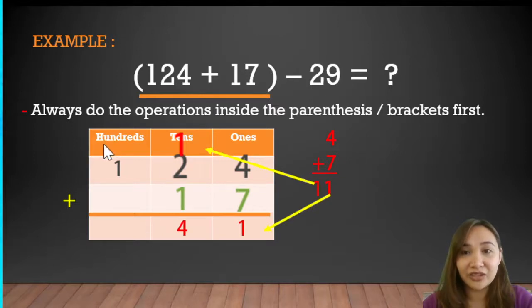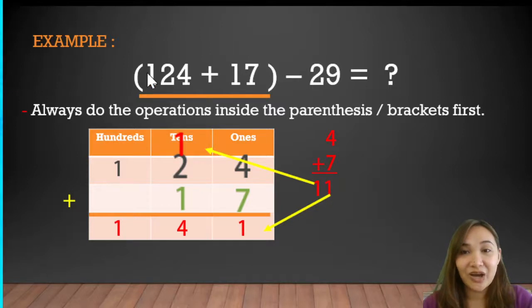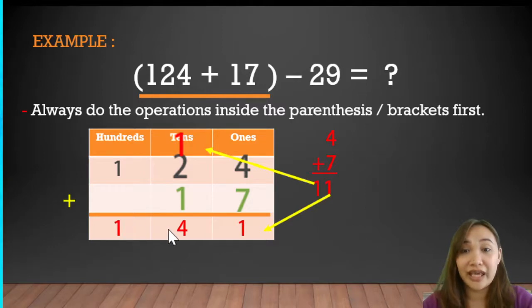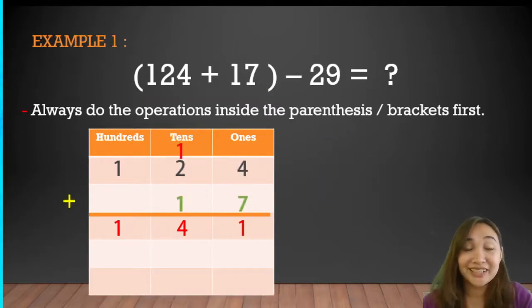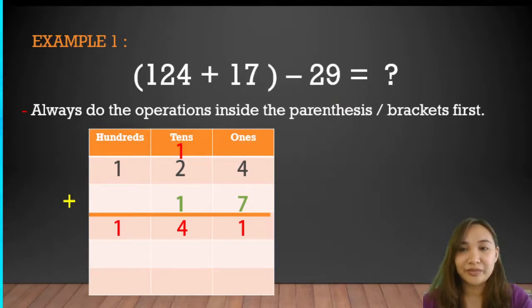Now we add the hundreds. Since there is only a 1, we bring it down. So 124 plus 17 equals 141. Let's continue to the next step.